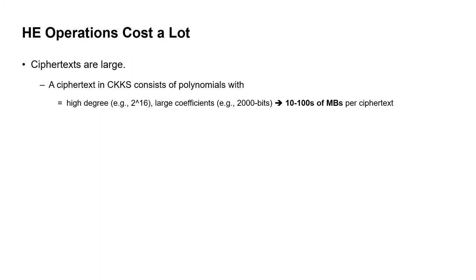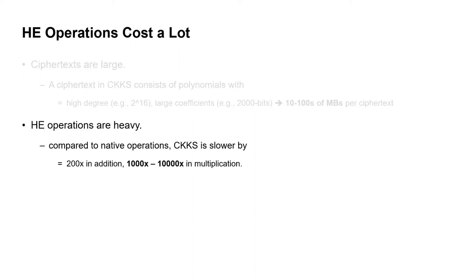The main problem of HE is extremely high cost. First, the ciphertexts are extremely large. The size of a single ciphertext in CKKS reaches even hundreds of megabytes because each ciphertext consists of polynomials having many coefficients and also high degree. For that, the HE operations are heavy. Compared to native integer or floating-point operations, they are slower by 200 times in addition or by even up to ten thousand times in multiplication.